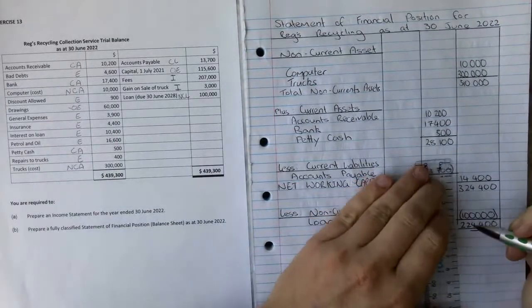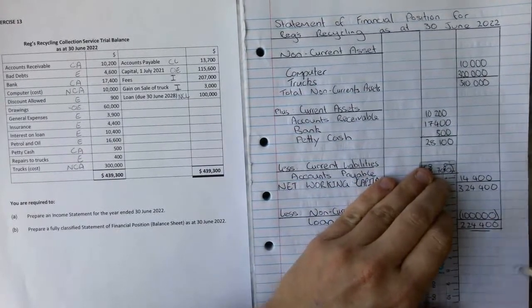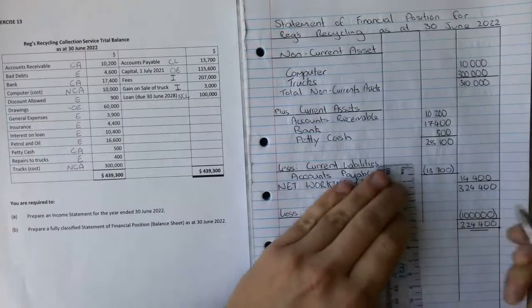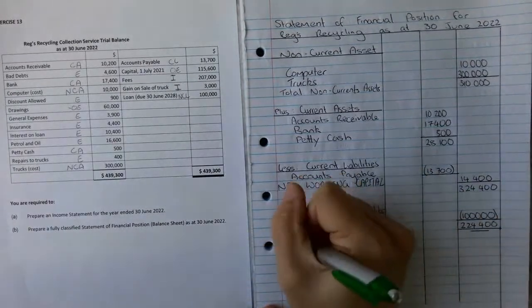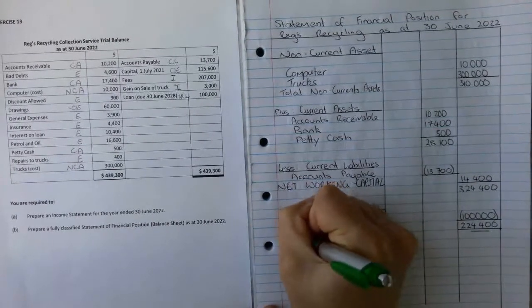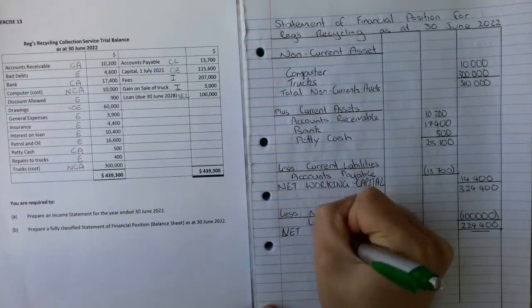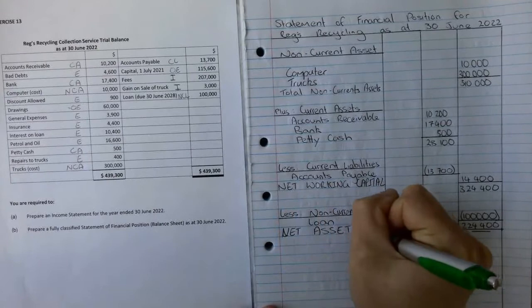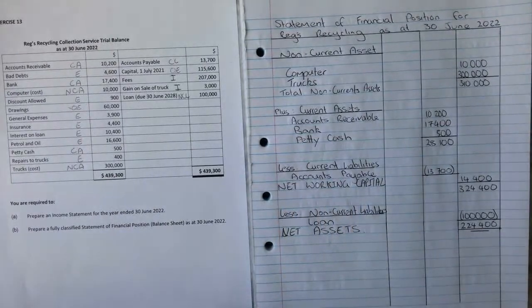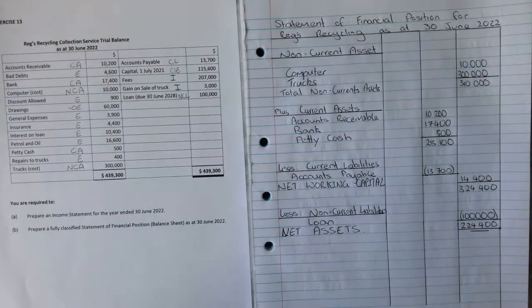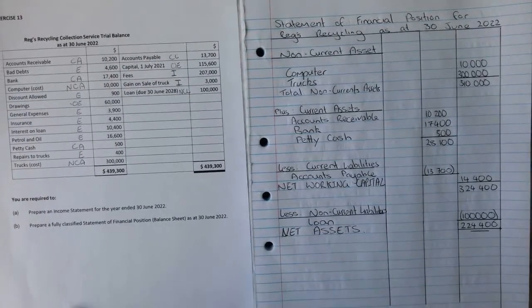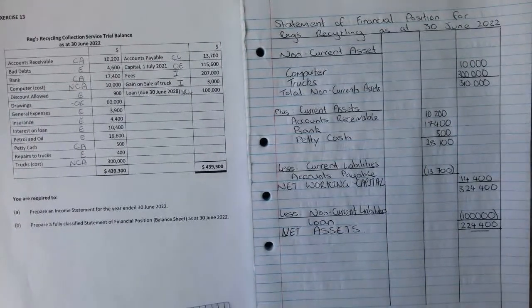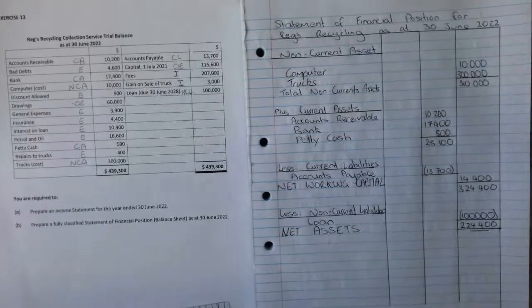That's going to be $224,400. What do we call that? We actually call that net assets. So we can move on to the equity section. That's going to be called net assets. Now that's the top half of the balance sheet done and now we're just going to crack on with the bottom half. This is where some people get a bit confused, but we will be able to work this out pretty quickly.